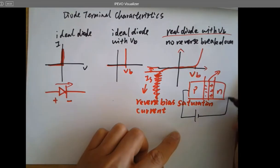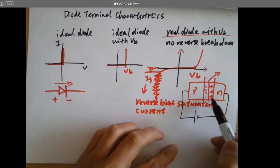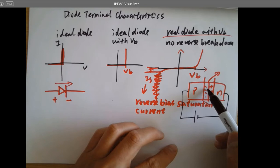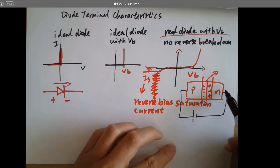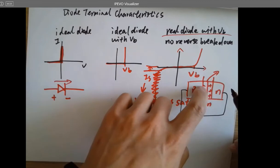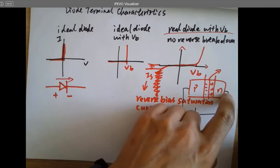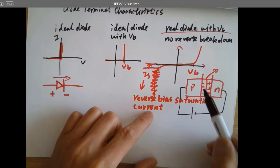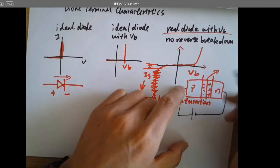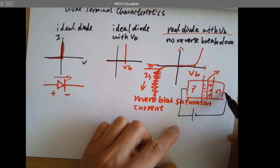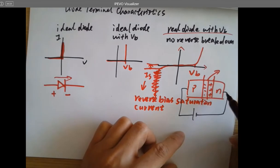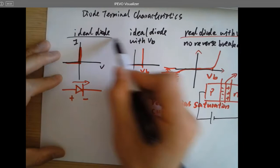When you forward bias the diode, it has to overcome this little built-in voltage because the built-in voltage is plus-minus from right to left, and you want to make it left to right to make it conductive. When you apply a forward bias voltage, the depletion region becomes thinner and thinner. When it's super thin, electrons can tunnel through this thin layer and reach the other terminal, and current flows through the diode. That covers all the diode models. What about Zener?